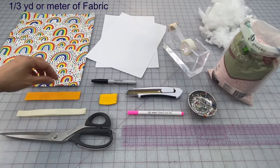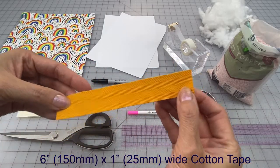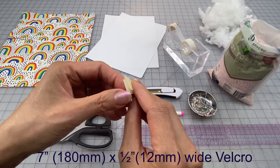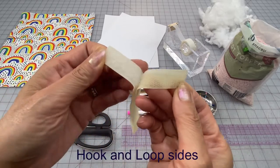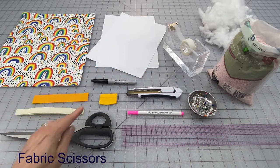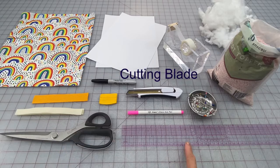You'll need a third of a yard of fabric, six inches of one inch wide cotton tape or ribbon, seven inches of half inch wide velcro, one side with the hooks and one side with the loops, fabric scissors, chalk or a marking pen, a cutting blade, and a ruler.